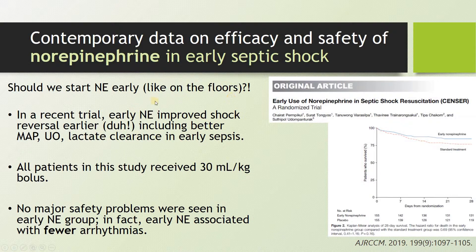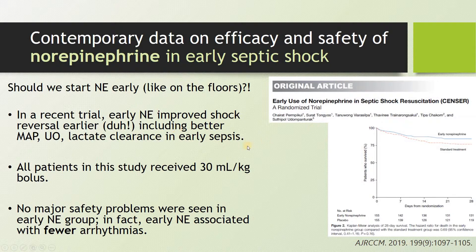Should we start norepinephrine early, like on the wards? A recent randomized trial looked at norepinephrine in early septic shock. Norepinephrine improved shock reversal earlier, including better MAPs, better urine output, and better lactate clearance early in the course of sepsis. All patients in the study received the 30 mL/kg bolus on average first. When patients were not responsive to fluid resuscitation, norepinephrine appeared safe — there were no major safety concerns, and in fact the early norepinephrine group was associated with fewer arrhythmias, likely fewer instances of AFib due to atrial stretch.